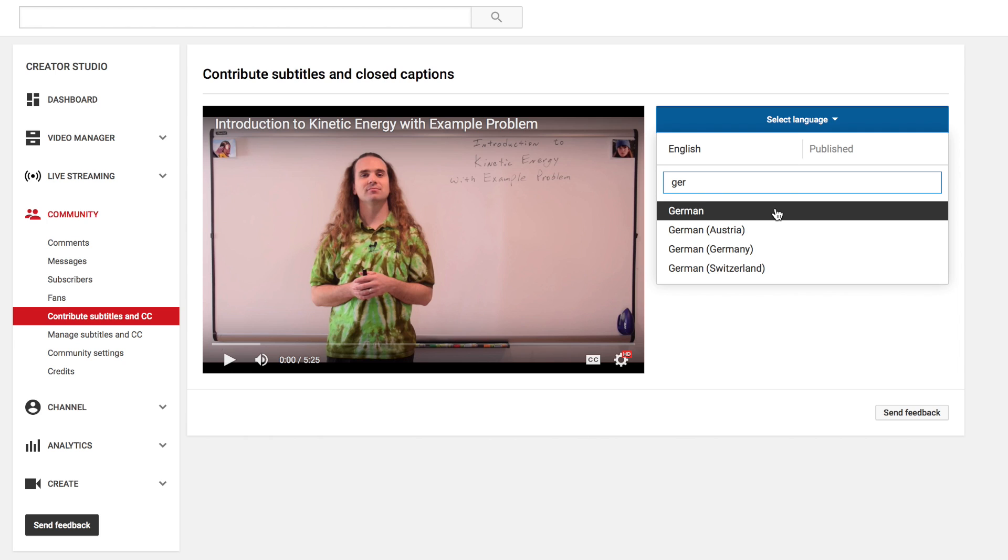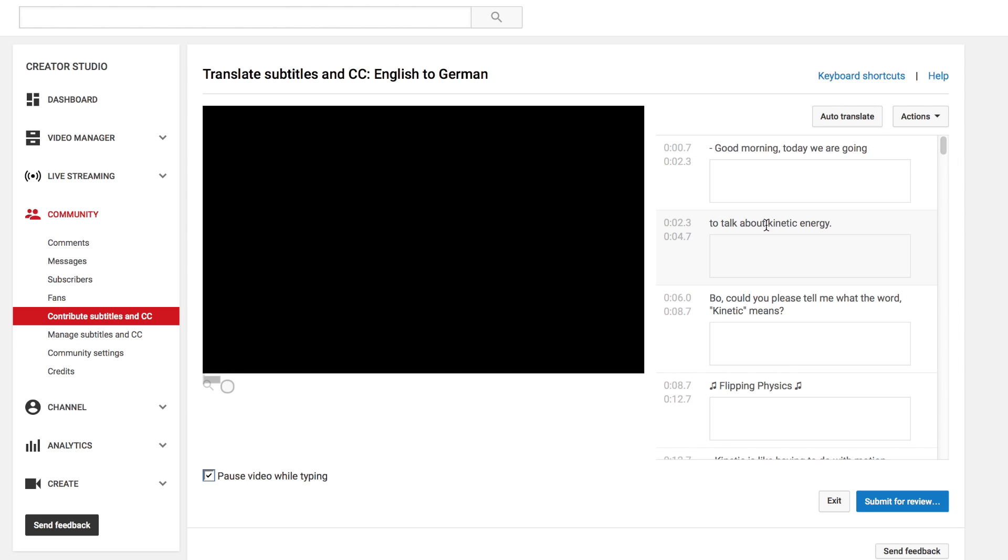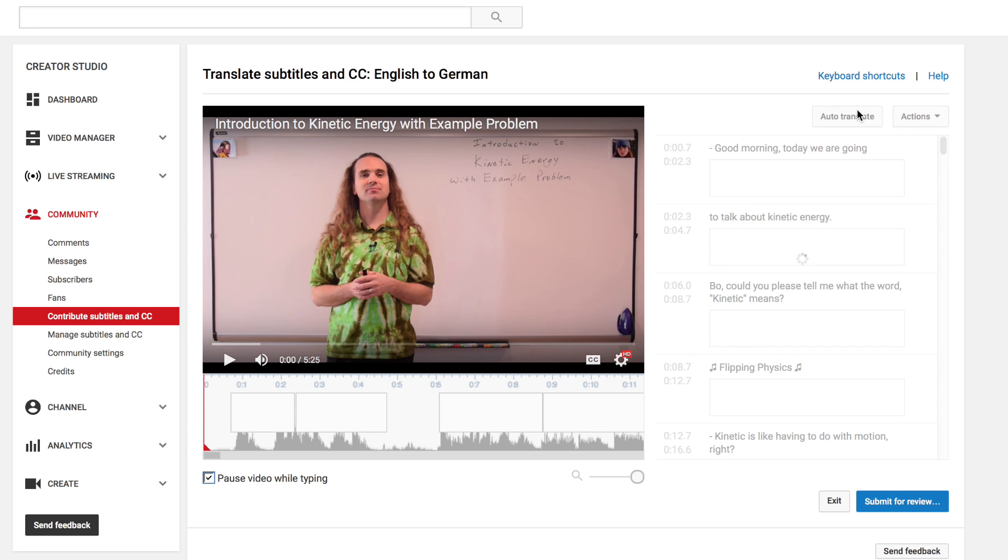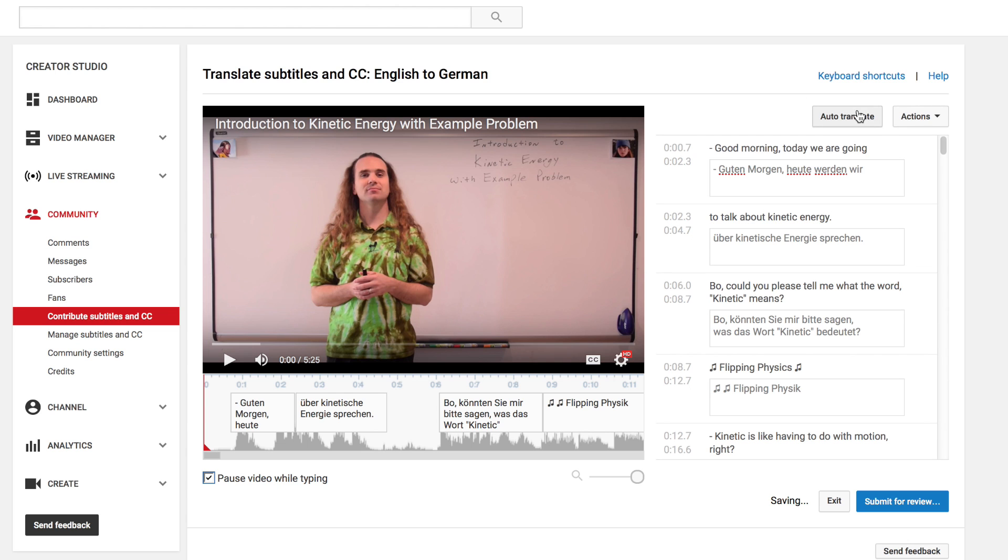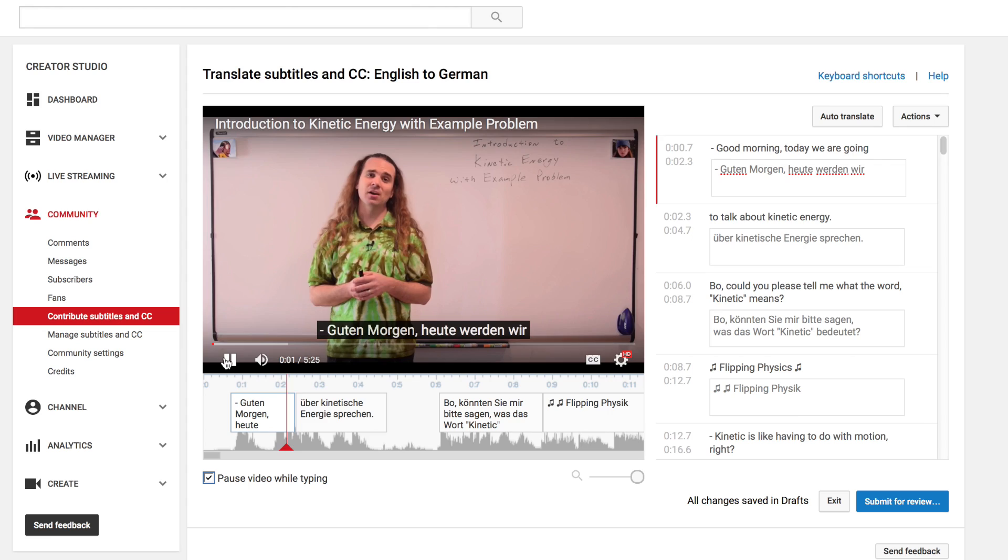Once you choose your language, the screen will switch to where you add subtitles. If you choose Auto-Translate, Google does its best to guess what the translations are. Then you watch the video and correct the translation mistakes.